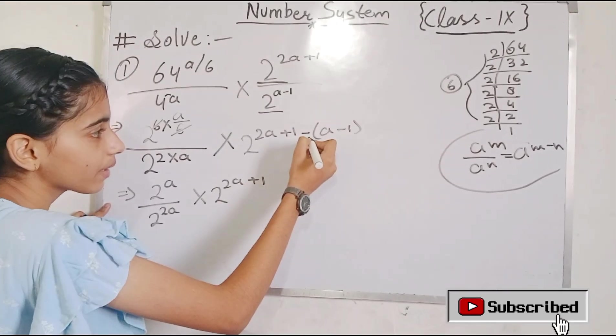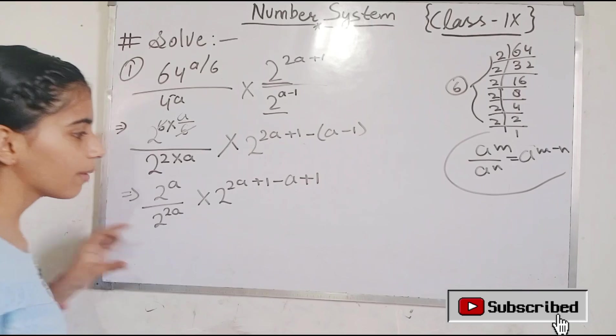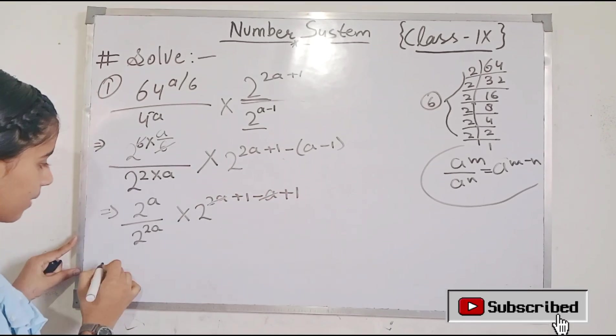So that means the sign in bracket should change. Now we can cancel from 2a minus 2a minus.